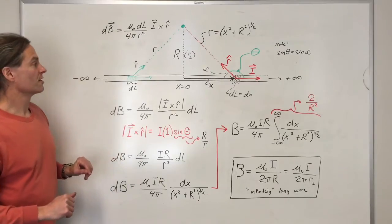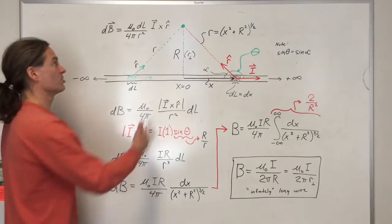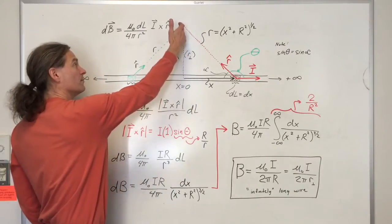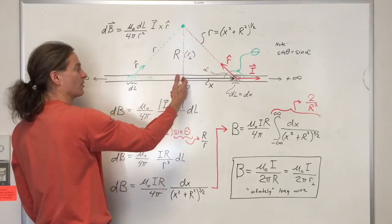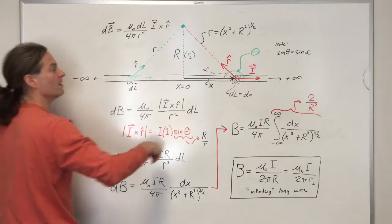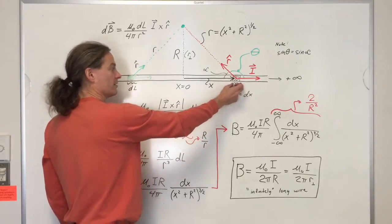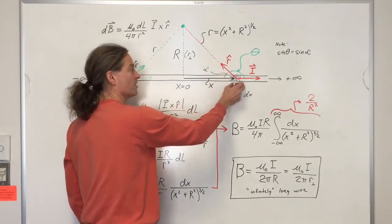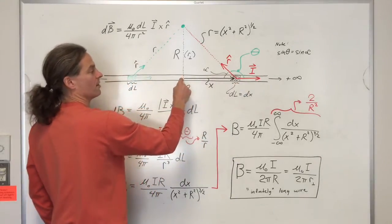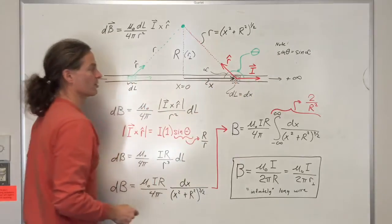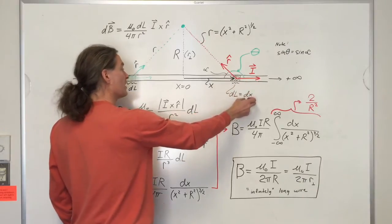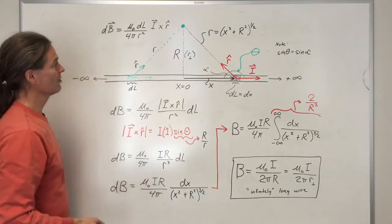Now let's organize our calculation. I need to choose an origin — I'm going to choose the origin right under the point where I want to know the field. Here's the region of positive x, here's the region of negative x. I'm going to use a general infinitesimal current segment located x away from the origin. The length dl of that little current segment is dx in this coordinate system.